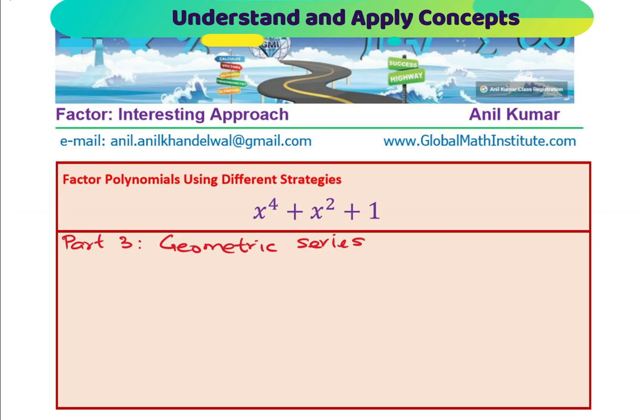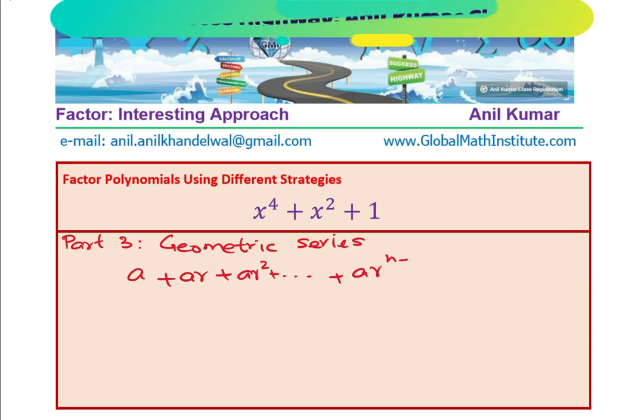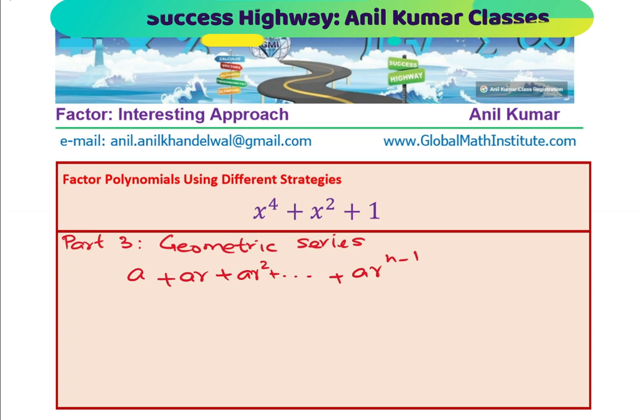I hope you remember the sum of terms in geometric series. So, in general, if I have a series which is A plus AR plus AR square plus so on till AR to the power of n minus 1, there are n terms here, right?